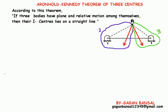The theorem states that if three bodies have plane and relative motion among themselves, then their i-centers lie on a straight line. To prove it, let's start with the proof.